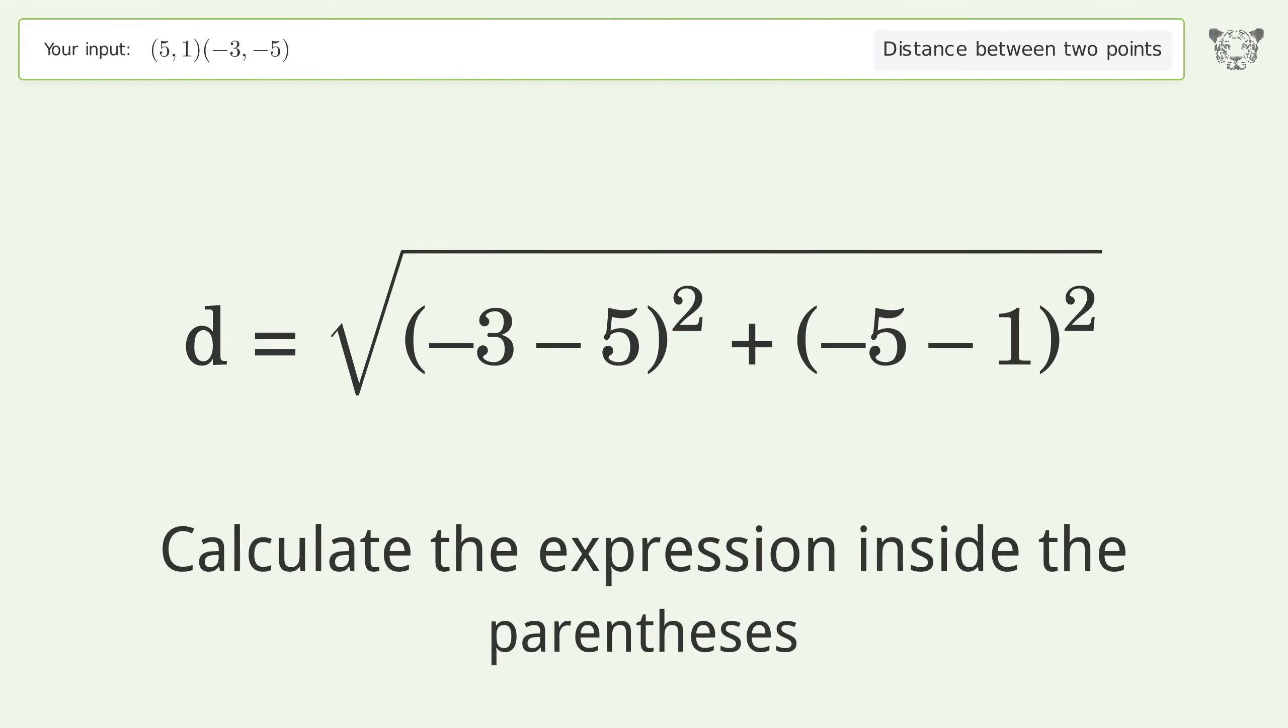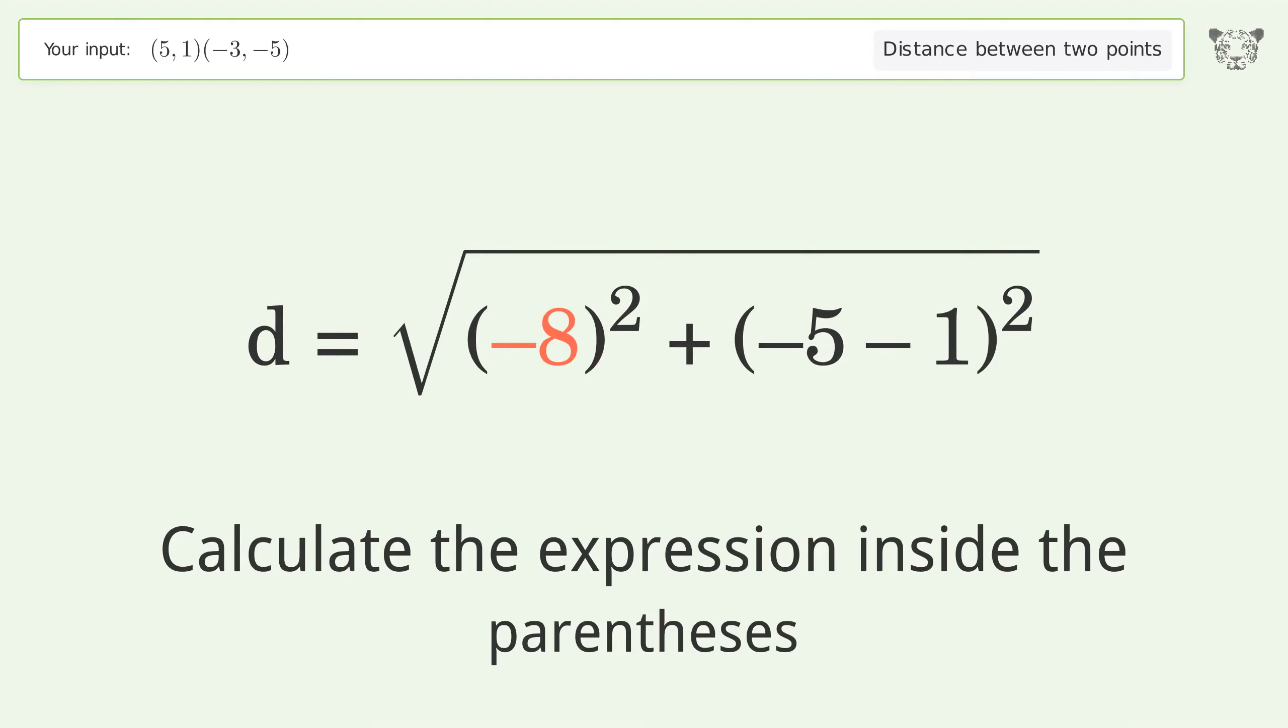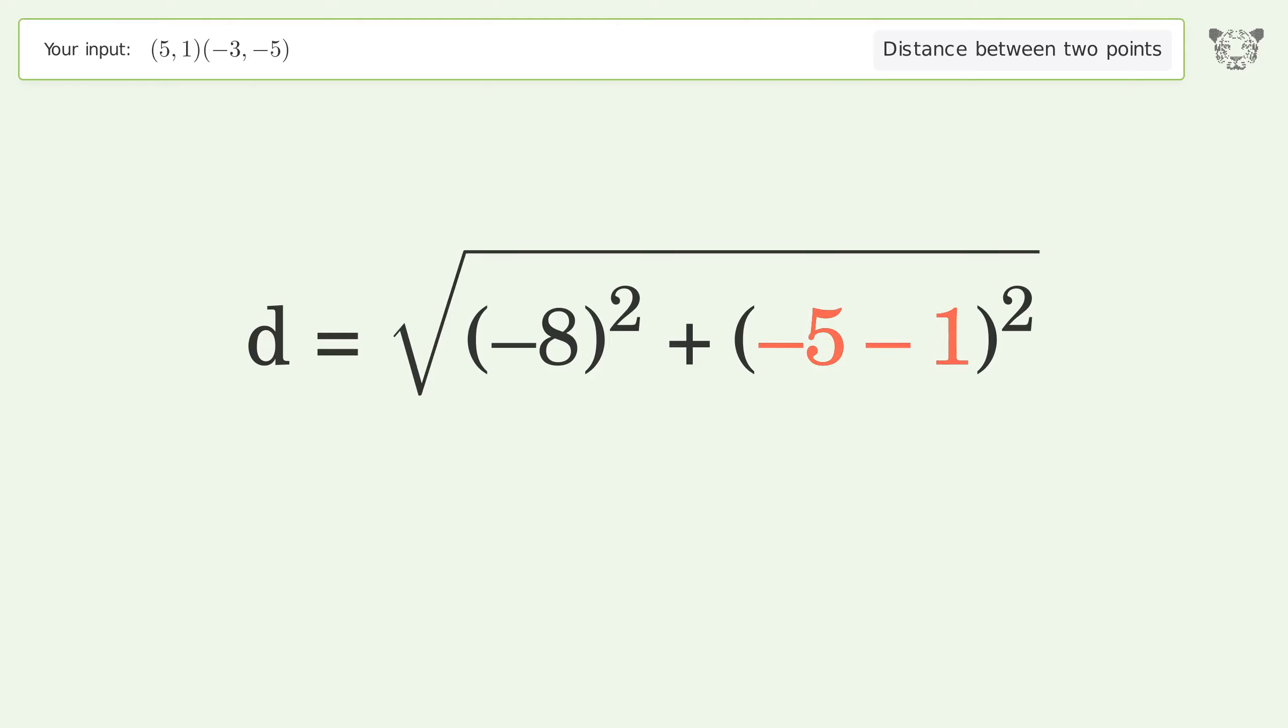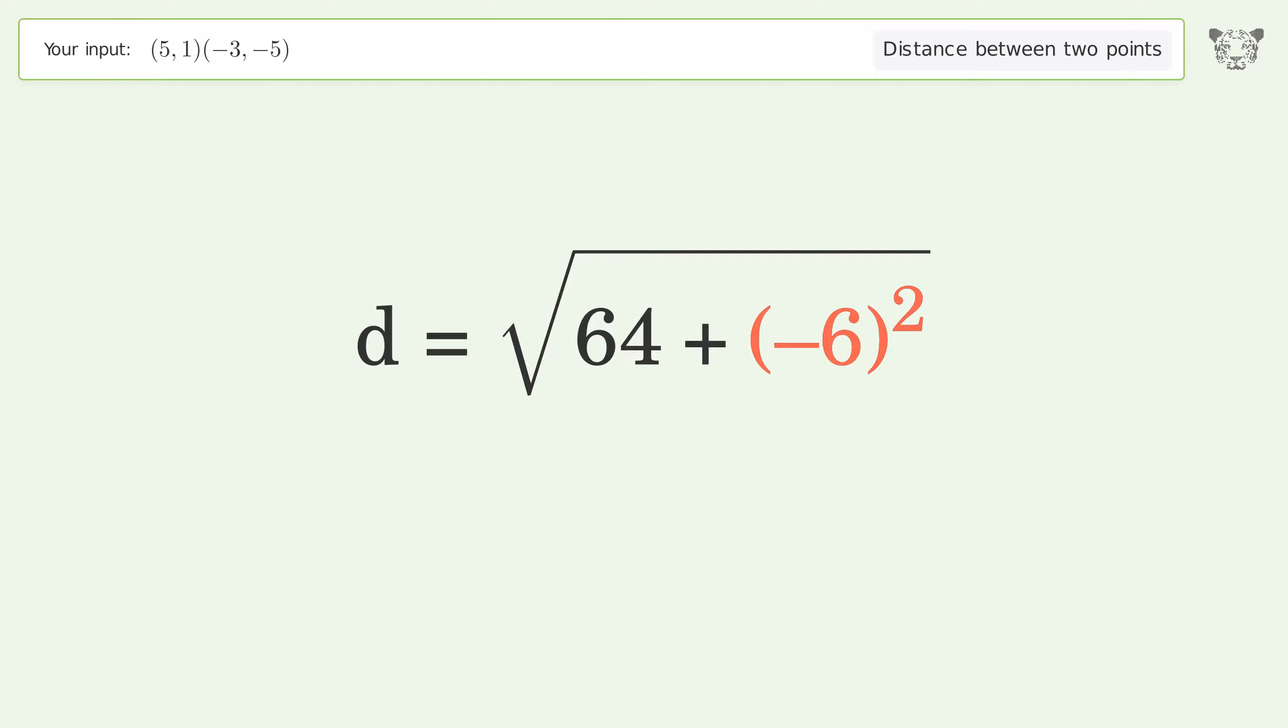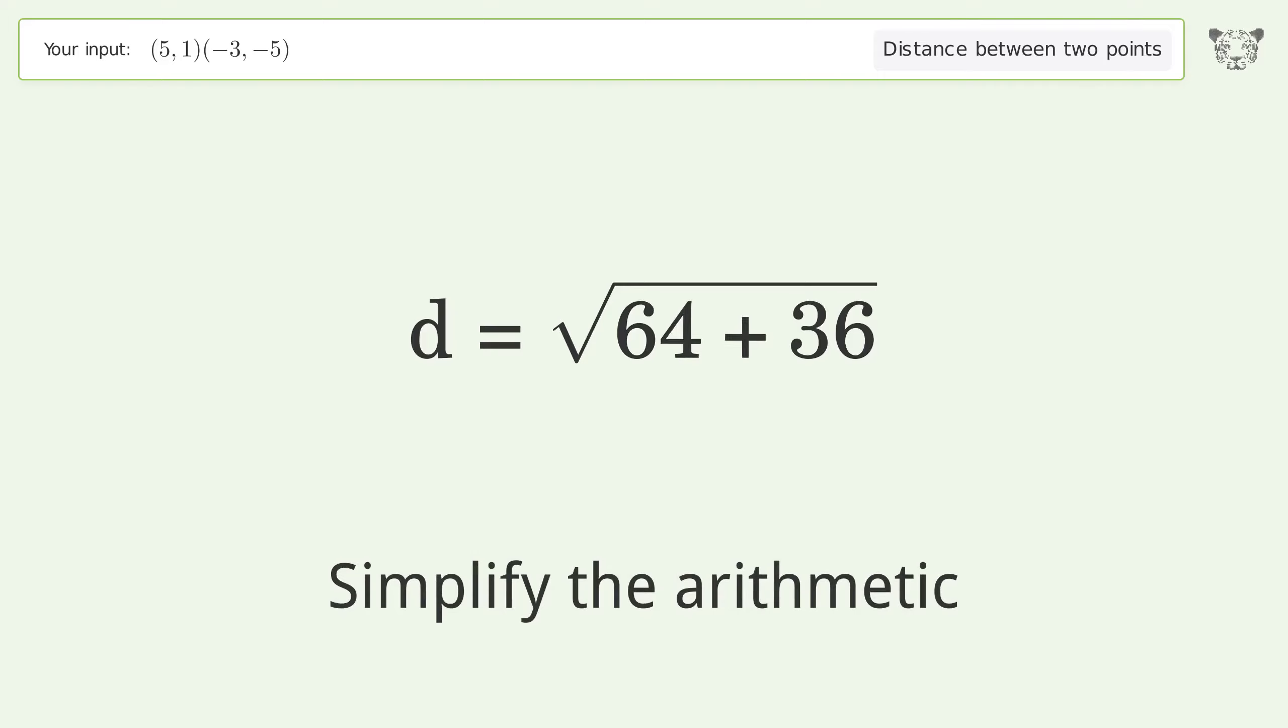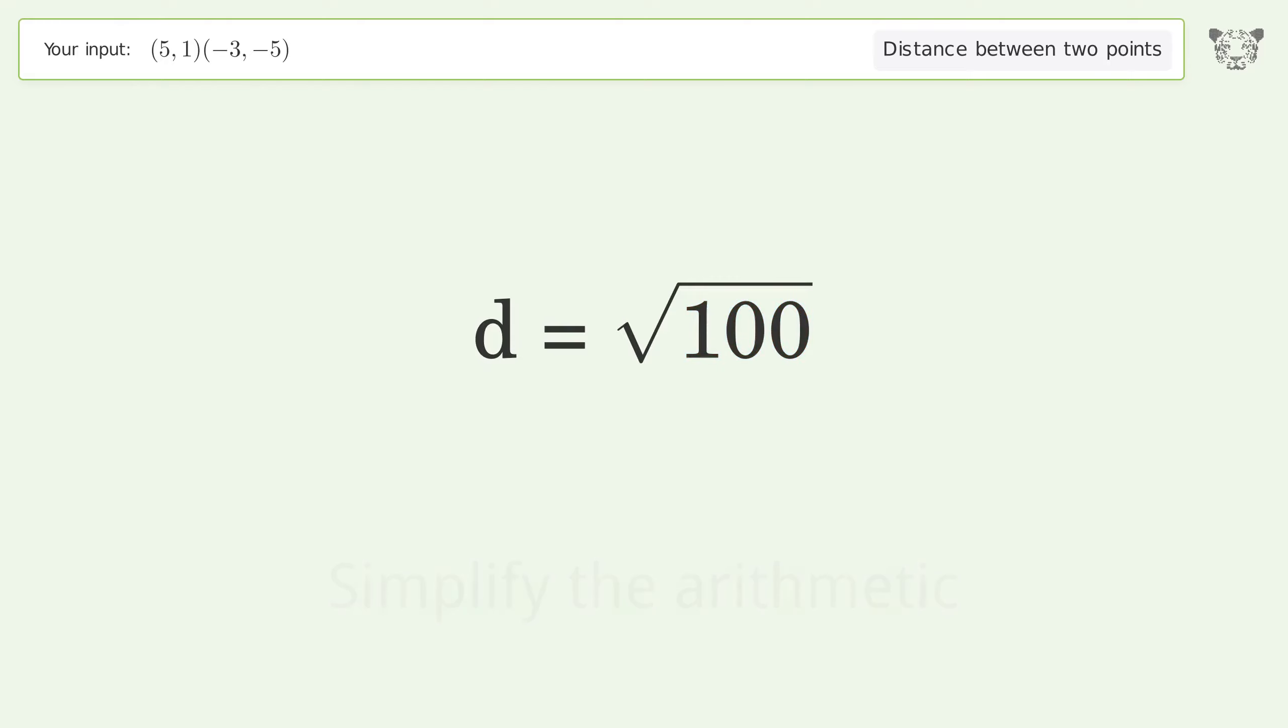Calculate the expression inside the parentheses, simplify numbers raised to exponents, then simplify the arithmetic. And so the distance between the two points is the square root of 100, or 10.